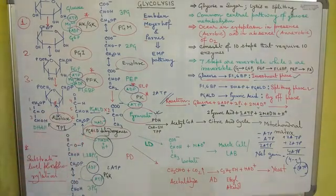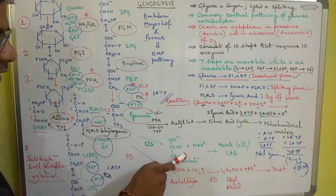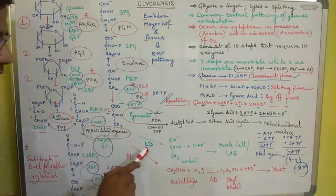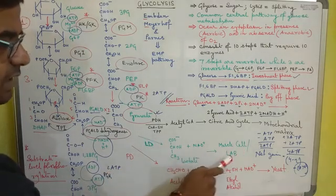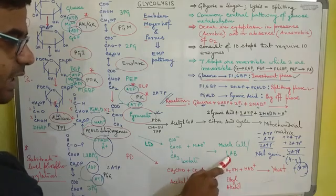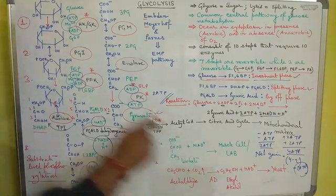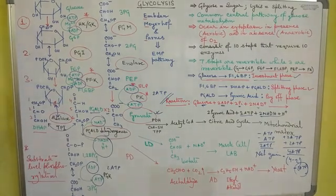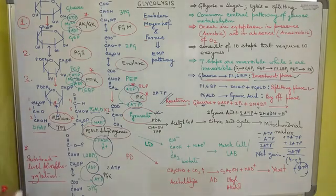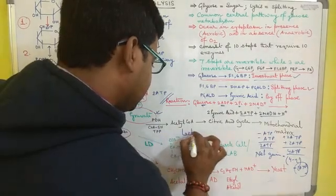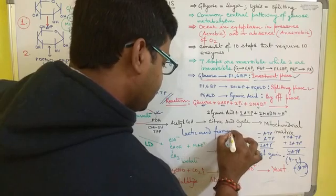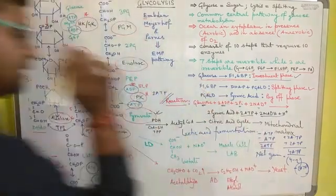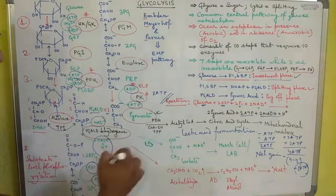During anaerobic respiration, pyruvic acid can follow one of two fermentation pathways. In lactic acid fermentation, pyruvic acid is converted into lactate by the enzyme lactate dehydrogenase. This reaction occurs in muscle cells as well as in lactic acid bacteria. In both anaerobic pathways, NADH is converted back into NAD+.